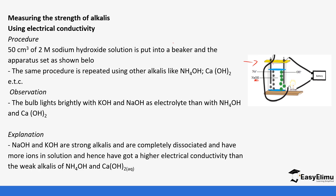Sodium hydroxide and potassium hydroxide are strong alkalis because they dissociate completely and have more ions in solution — more ions means electricity moves through the solution faster. Since ammonium hydroxide and calcium hydroxide release fewer hydroxide ions, they have low electrical conductivity.